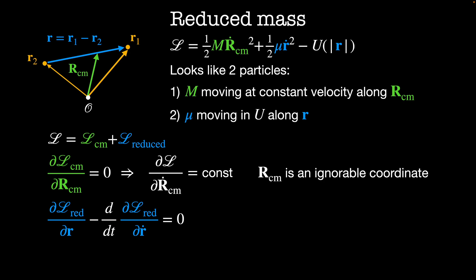Then the Euler-Lagrange equation for the reduced Lagrangian is given by dL_reduced by dr minus d by dt of dL_reduced by dr dot equals zero. We can write this out as minus the gradient of U minus d by dt of μ r dot is equal to zero, or equivalently μ r double dot is equal to minus the gradient of U. And this is the equation of motion for our reduced system.